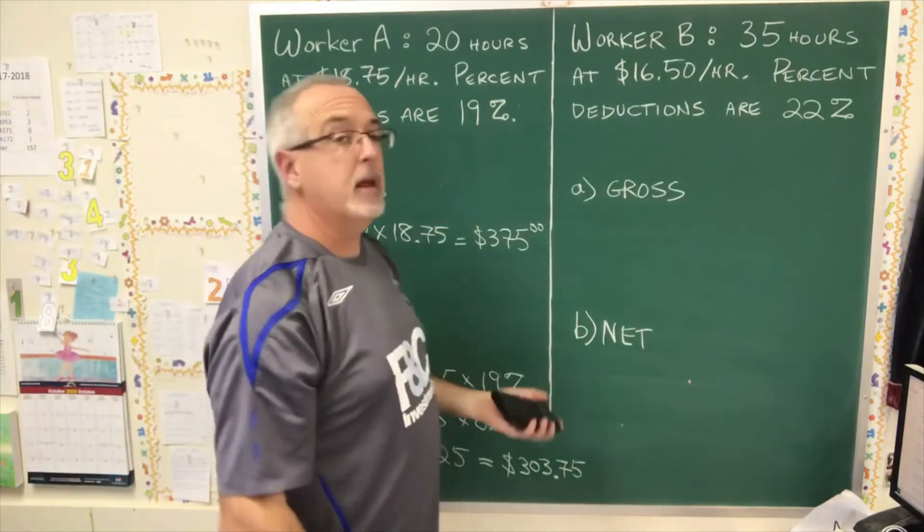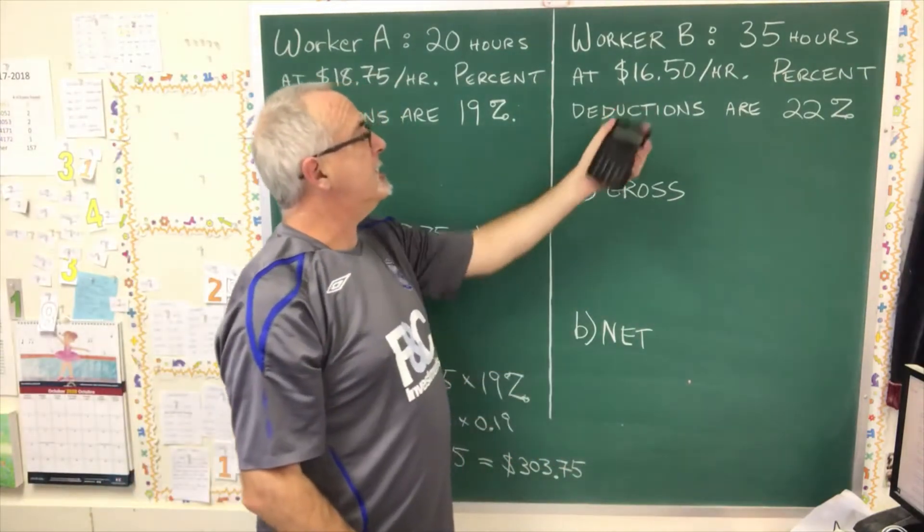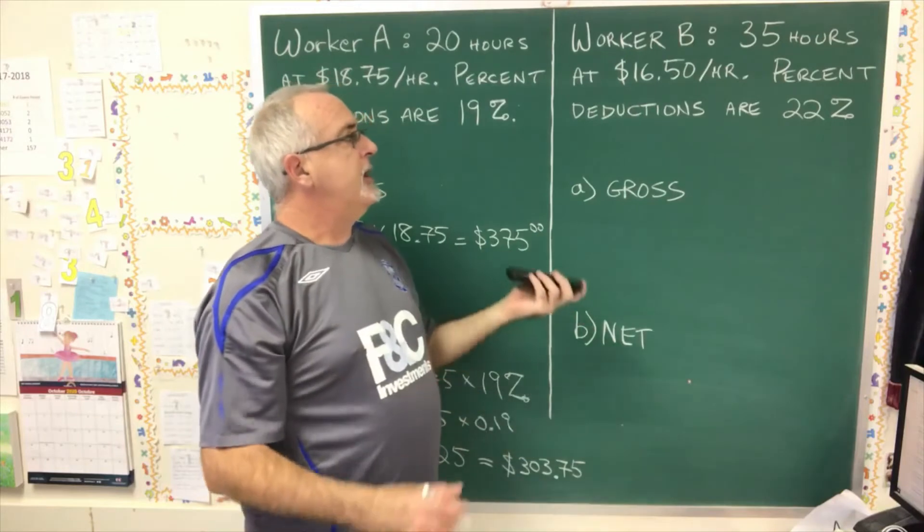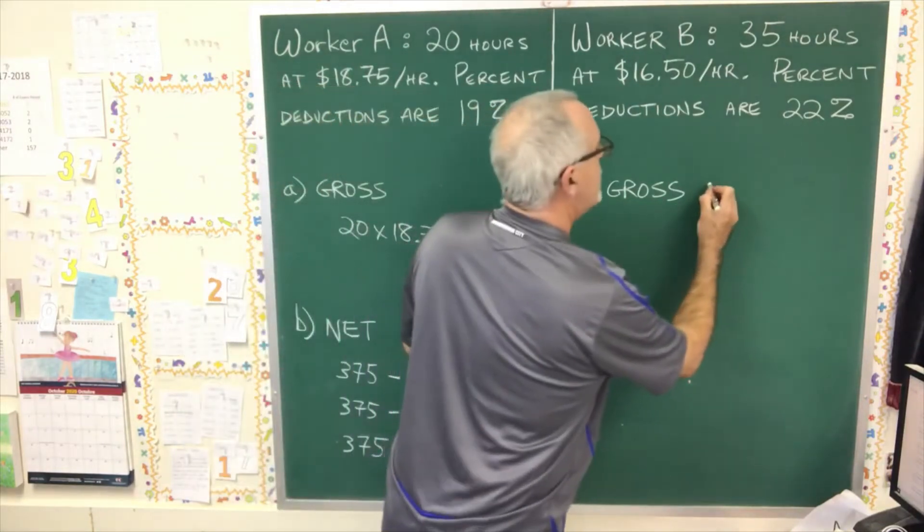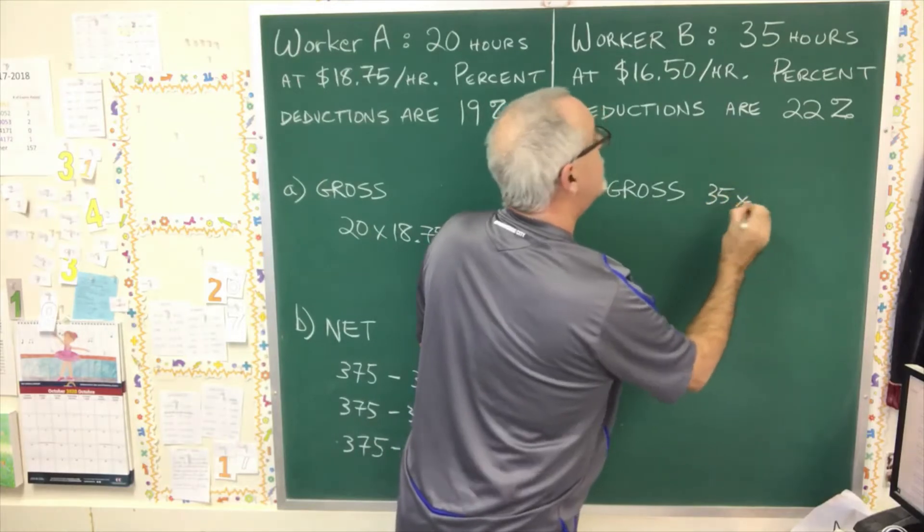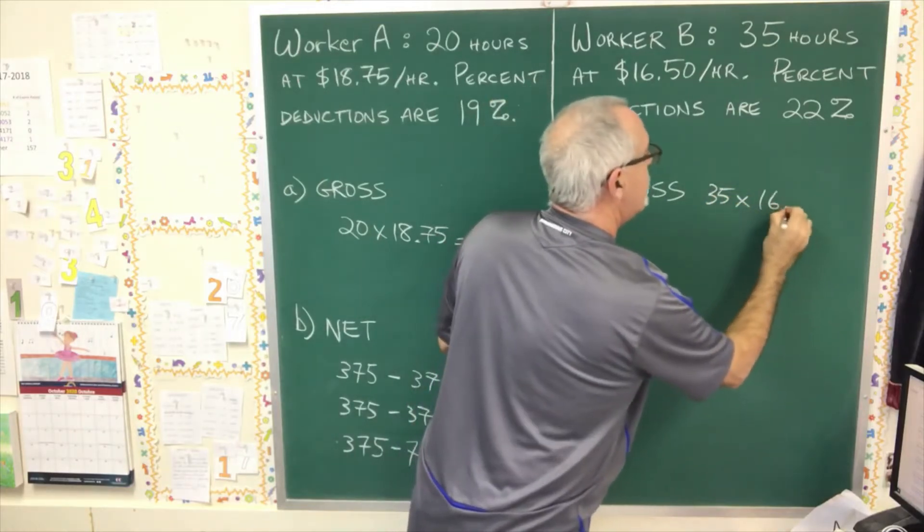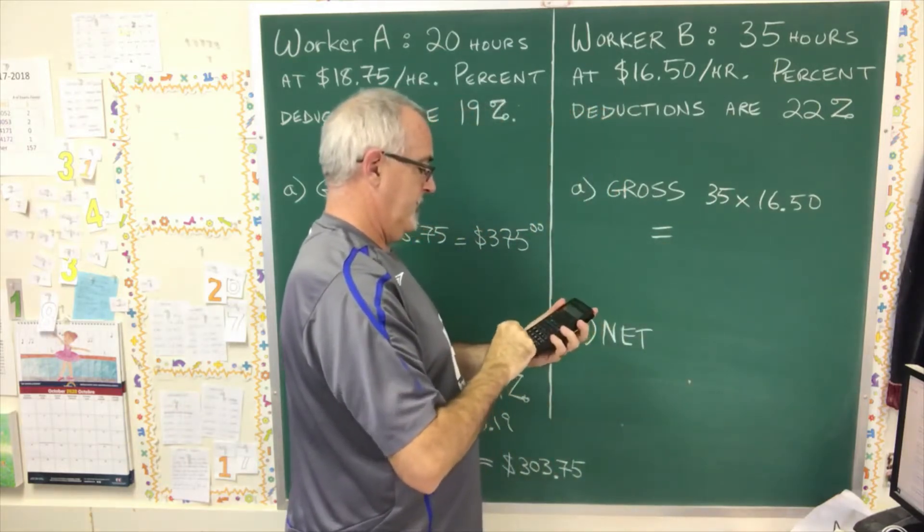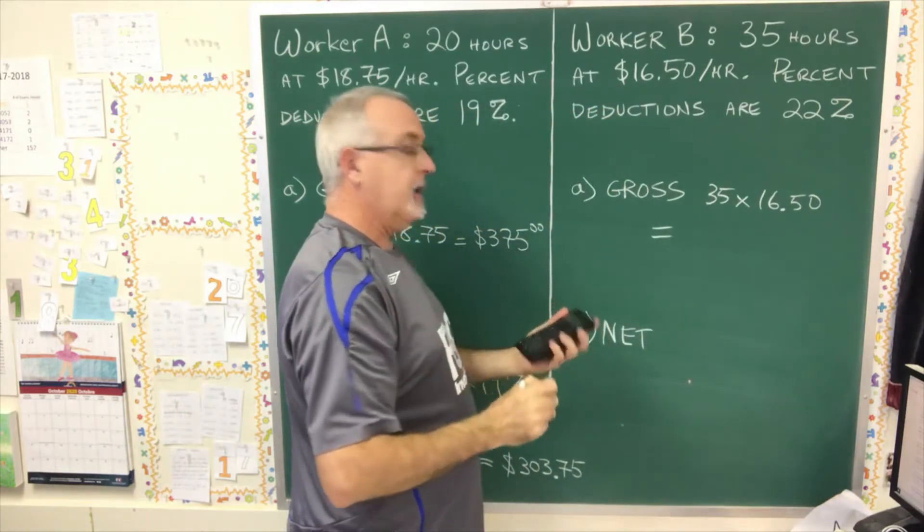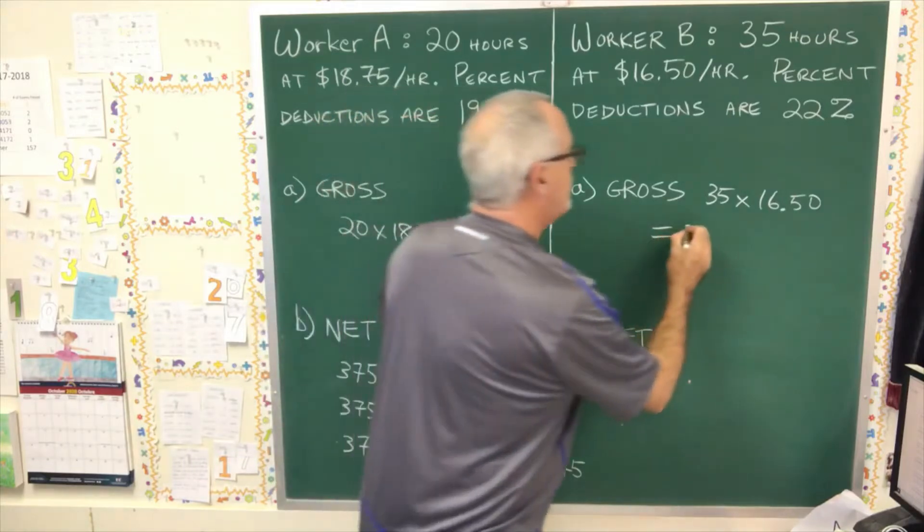We have worker B working 35 hours at $16.50 per hour. Percent deductions are 22%. So the gross is 35 times 16.50, and I get $577.50.